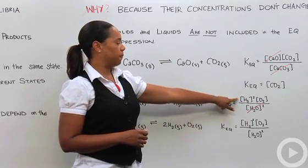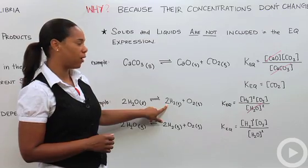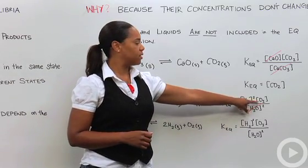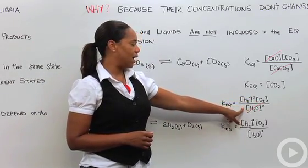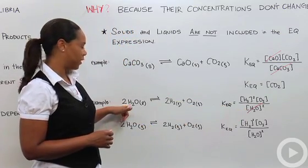KEQ equals H2 squared, remember it's squared because of the coefficient out in front, times O2 divided by H2O squared because of the coefficient in front.